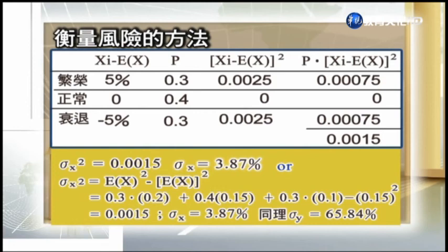同樣的方法用在宏碁，可以求得宏碁的標準差是65.84%。所以你可以看見兩家公司期望報酬一樣都是15%，但宏碁的標準差將近是環球水泥的快15倍以上。我們到這邊休息一下再繼續。